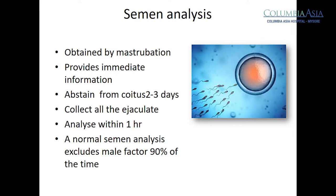We do a semen analysis, which is a simple test that gives us an idea whether he is having sperms in his semen and if the sperms are there, whether they are healthy sperms or weak sperms. If the sperms are weak, we give medication to improve them, and over a period of 3 to 6 months, majority of the patients will improve and they can reproduce a child.